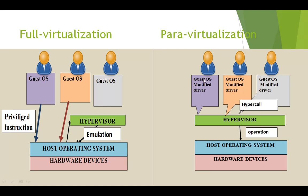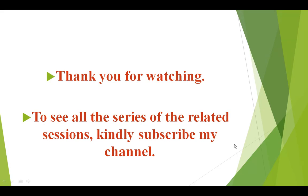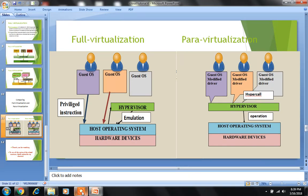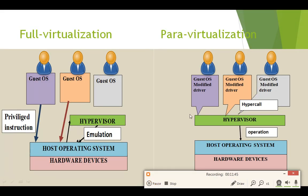In para virtualization, the guest operating system is modified with a driver, and the driver provides communication to the hypervisor layer. The modified guest OS communicates directly to the hypervisor, which performs the hardware operations and returns results to the driver. Because guest OSes are already aware they share the hardware, the hypervisor has lower overhead. In full virtualization, since guest OSes are not modified and are unaware of each other, the hypervisor has much greater responsibility, and the hardware must reserve more processing power to run the hypervisor.